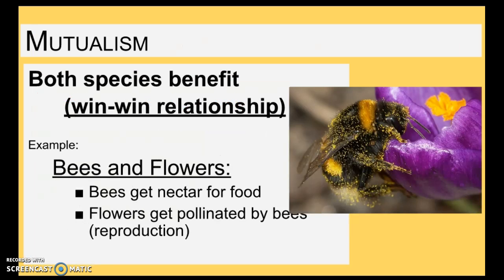First we have mutualism. Mutualism is a win-win relationship for both involved. For example, we have bees and flowers. The bees get the nectar, which they bring back to their hive and turn into honey. And then the flower gets the pollen — pollen is actually like the flower's sperm — and the bees bring it to other flowers so they can reproduce. It's a pretty cool relationship. The flowers rely on the bees, the bees rely on the flowers. They both win.